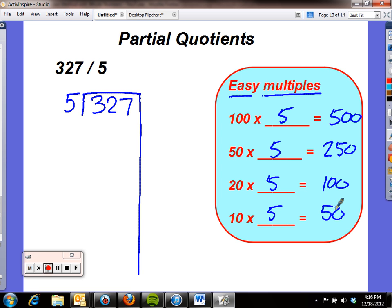So I can say 5 goes into 327. Can I do it 100 times? I can't, but I can do it 50 times. So my 50 goes over here, and I know that 50 fives is 250.